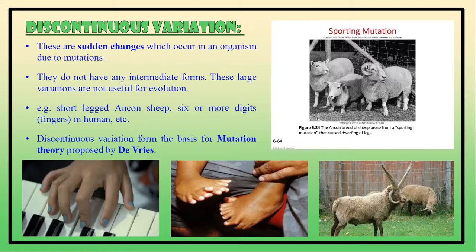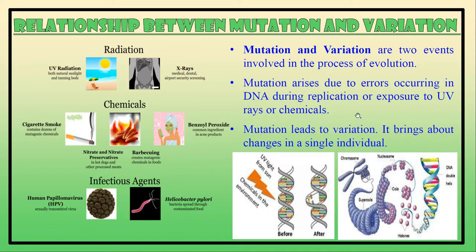Discontinuous variations are sudden changes which occur in an organism due to mutation. They do not have any intermediate form. These are large variations which are not useful for evolution. Examples include short-legged Ancon sheep and extra digits or fingers in human beings. Discontinuous variation forms the basis for the mutation theory proposed by Hugo de Vries.